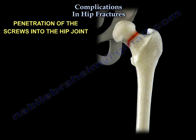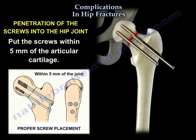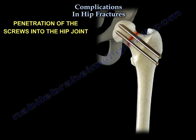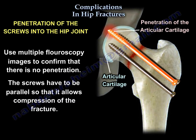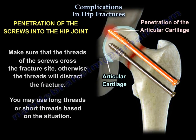Another complication is penetration of the screws into the hip joint. The screws should be placed within 5 mm of the articular cartilage. Use multiple fluoroscopy images to confirm no penetration, and the screws must be parallel to allow compression of the fracture. Make sure the threads of the screws cross the fracture site; otherwise, the threads will distract the fracture. Long or short threads can be used based on the situation.